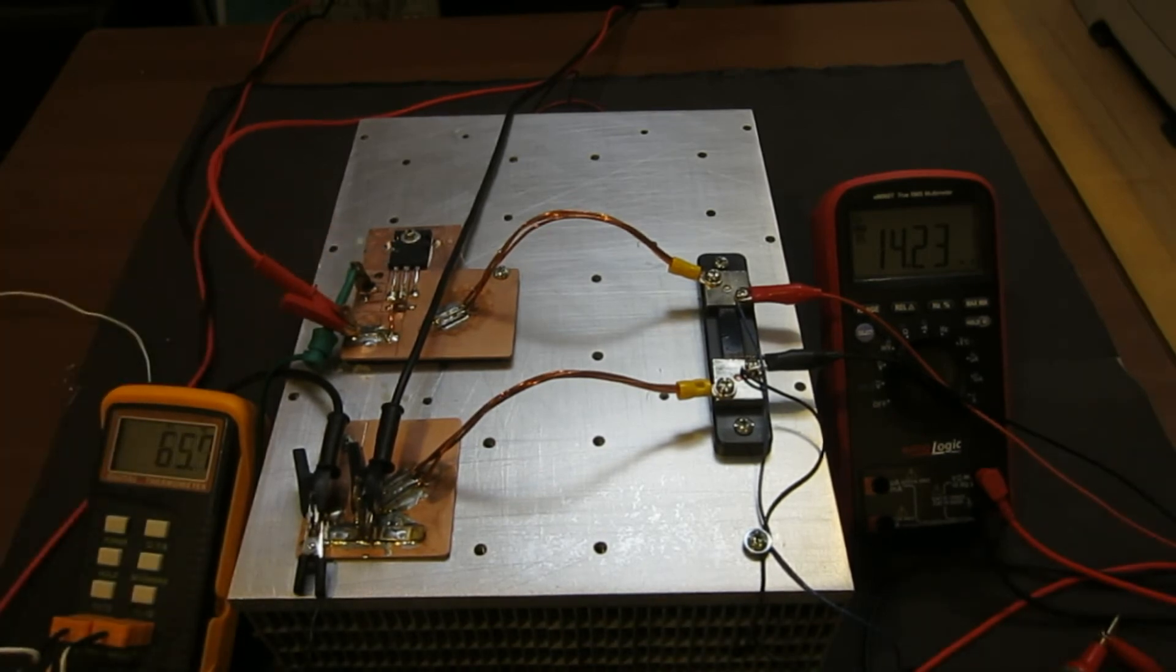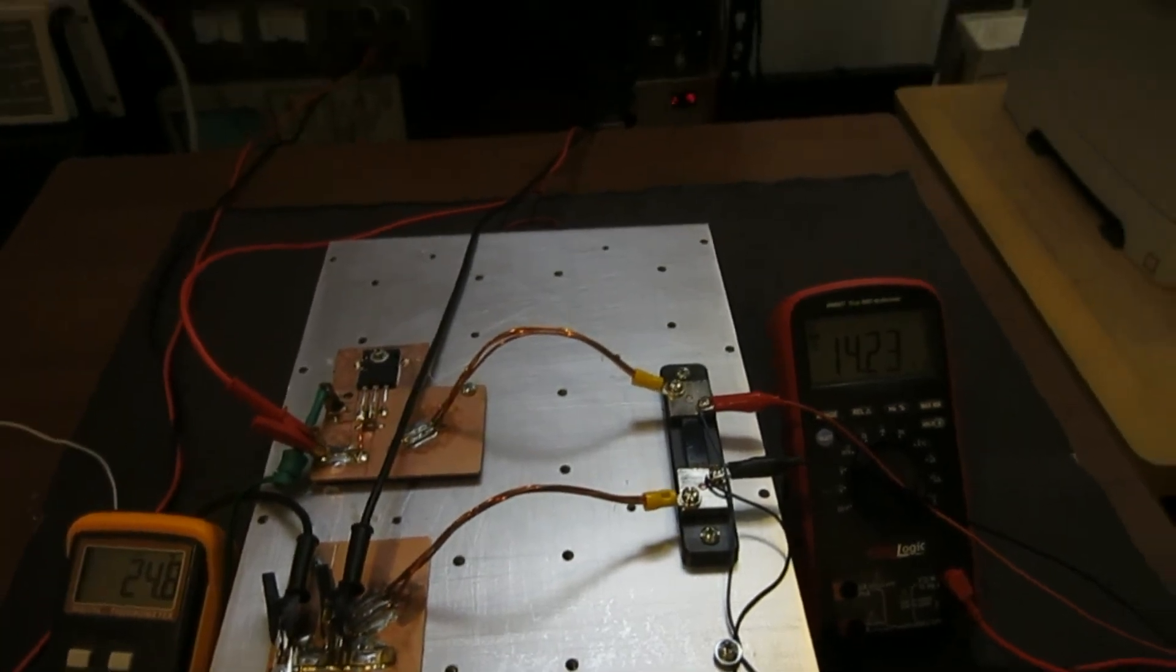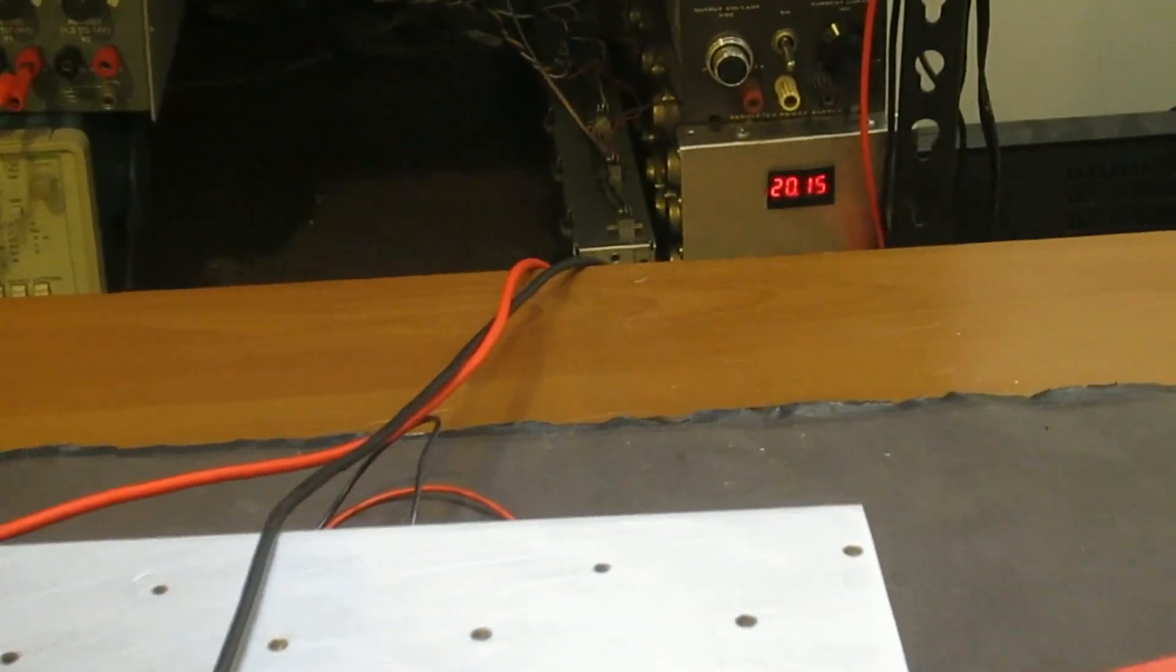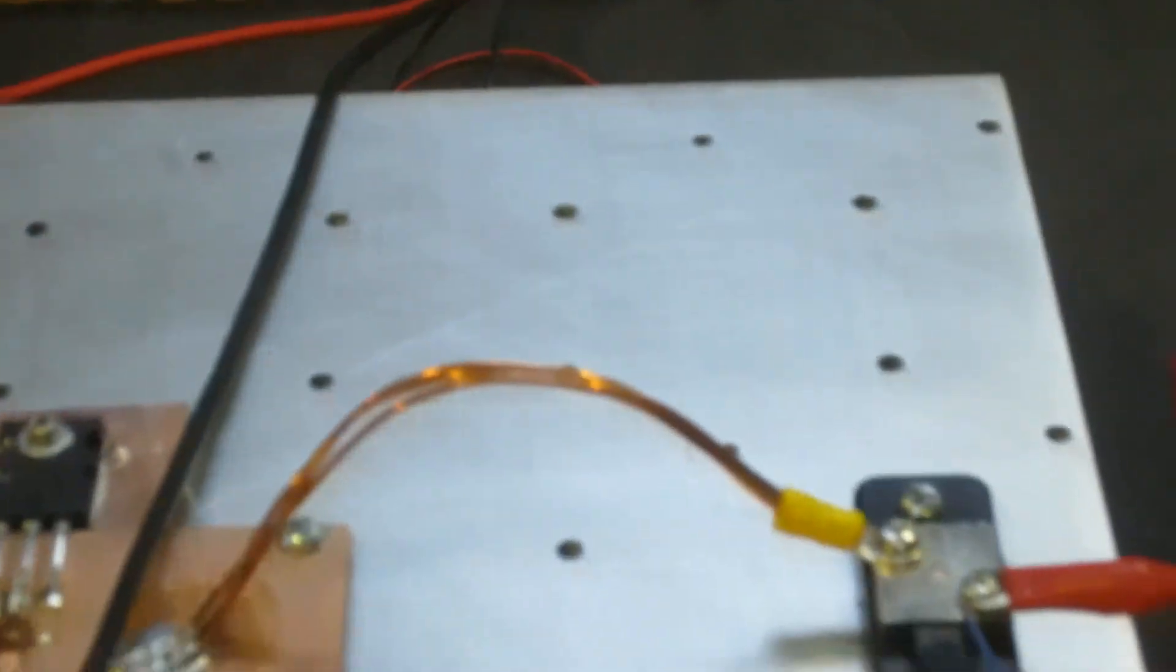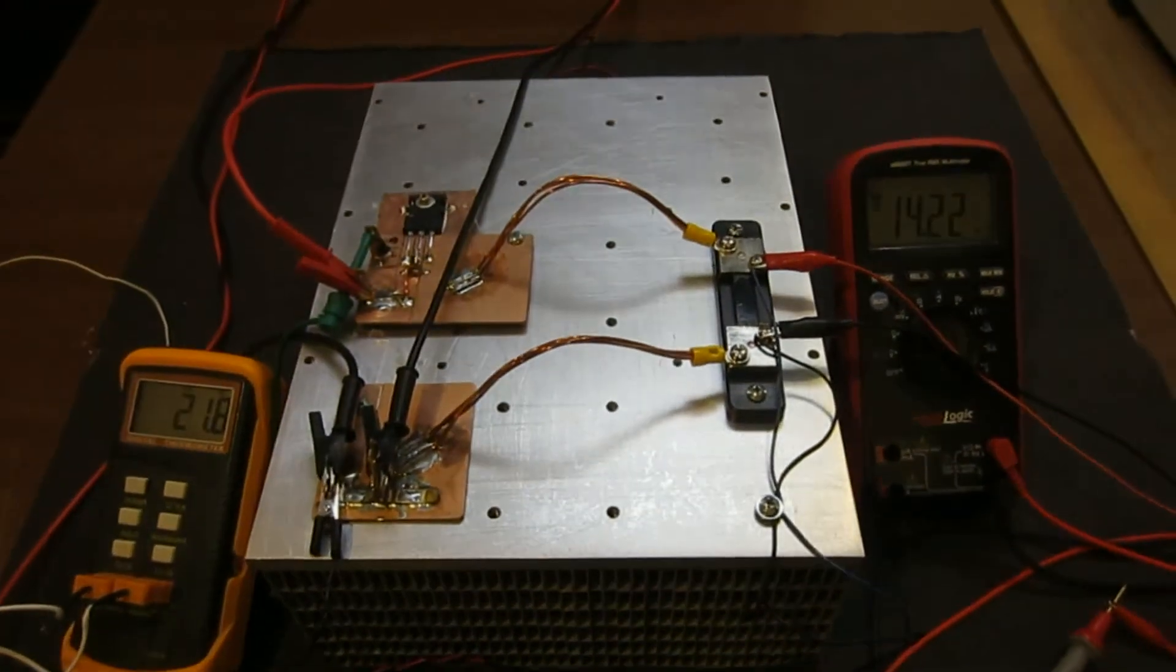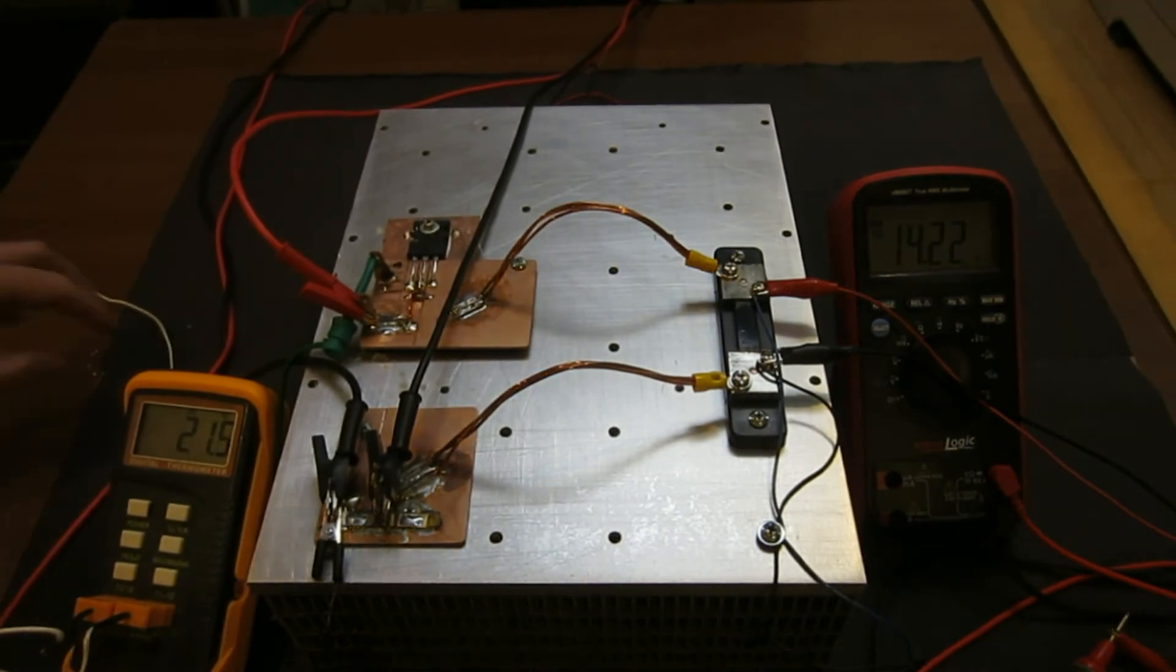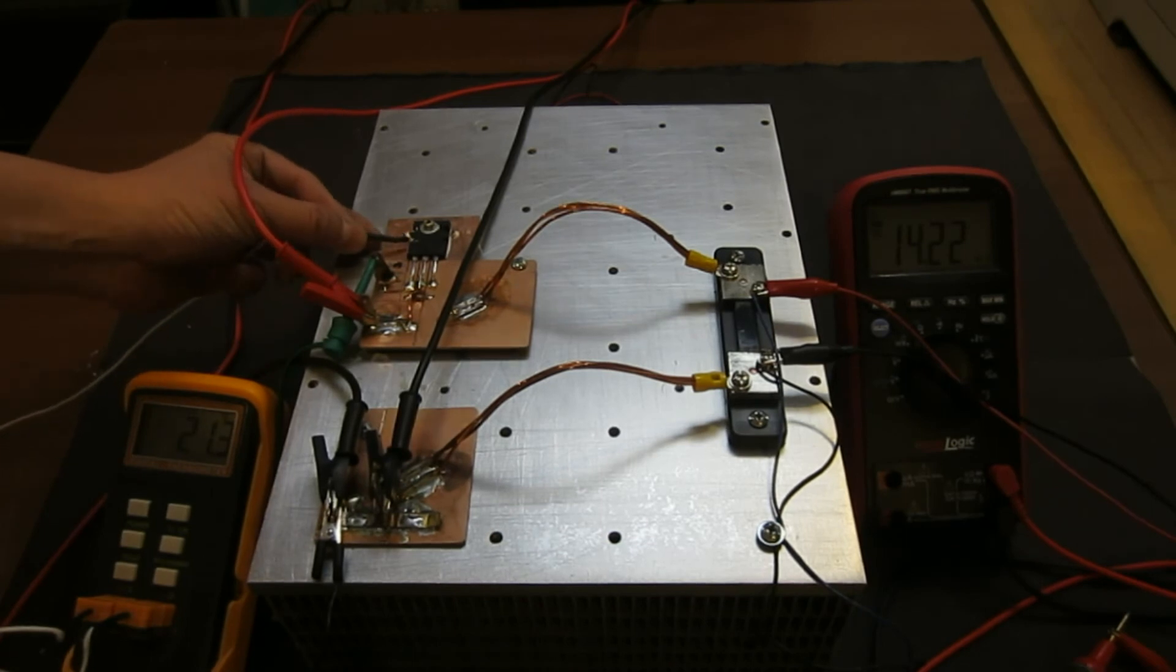So now let me increase that to 20 volts. Now you can see that I have increased power supply voltage to 20 volts. And the current is still at about 9.5 amps. So now let's take a look at the temperature measurement. And I think right now we would be on par with what we had last time.